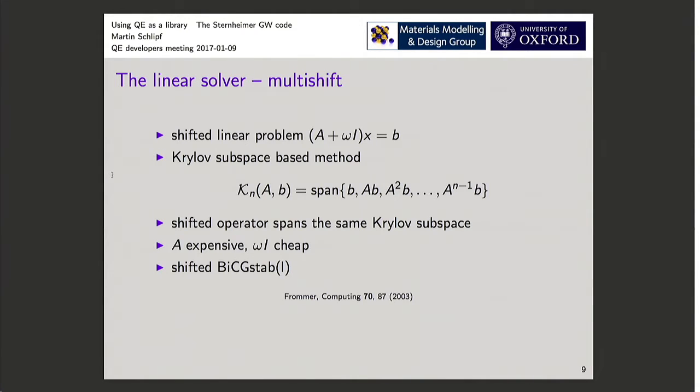Now the important part is application of this operator A. This would be Hamiltonian in our case. It's very expensive. Shifting it by an identity matrix is very cheap. So the idea is only apply this operator once and then solve all shifted systems at the same time.